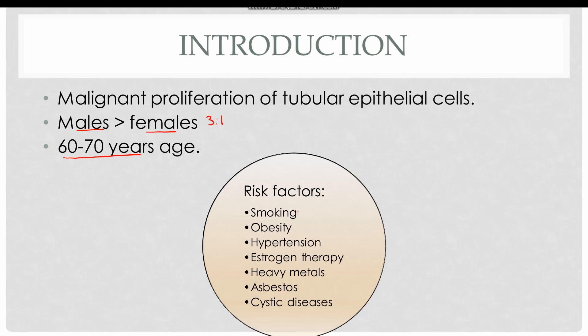The risk factors for renal cell carcinoma include smoking, which increases the risk by two times. Moreover, there is obesity, hypertension, and unopposed estrogen therapy — meaning therapy with estrogen without progesterone — which also predisposes to renal cell carcinoma.